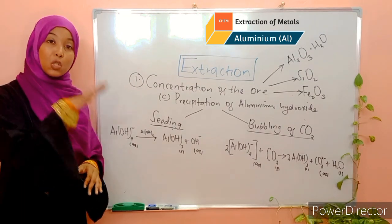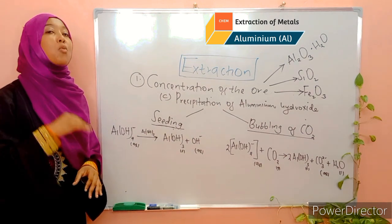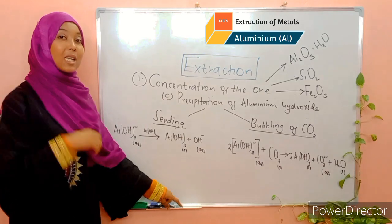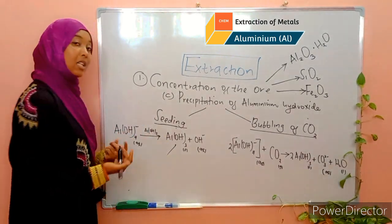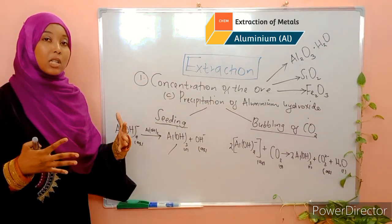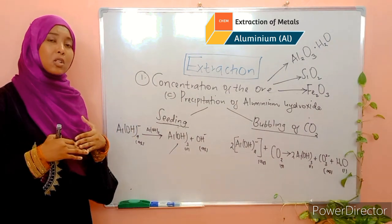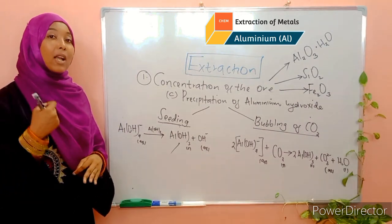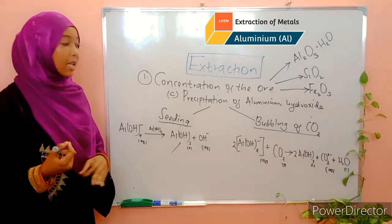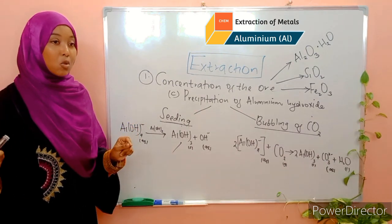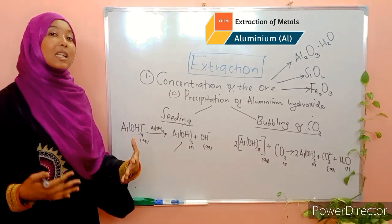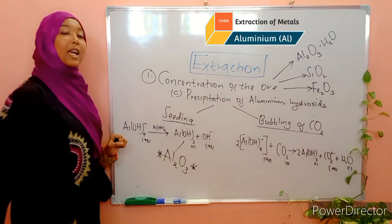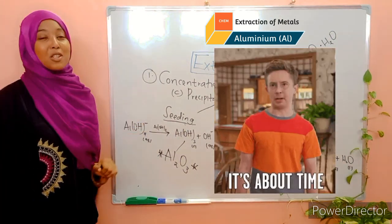At this point we have managed to remove the two impurities — iron-3-oxide and silica. Moving on to the next step: the aluminium hydroxide obtained is simply going to be roasted — heated at high temperatures. On heating, aluminium hydroxide decomposes to form water and aluminium oxide. Since aluminium is extracted through the electrolytic method, we need an electrolyte, which cannot be aluminium hydroxide but only aluminium oxide. So heating causes it to decompose, leading to the formation of aluminium oxide. At this point we are done with the concentration of the ore.